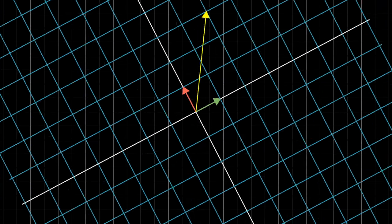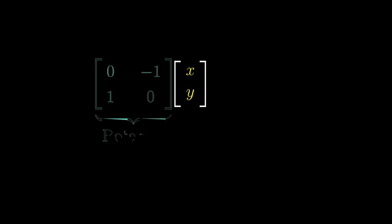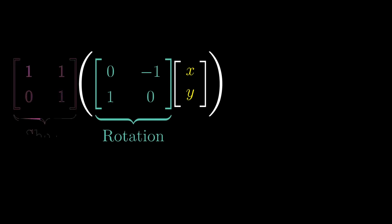Here's one way to think about that new matrix. If you were to take some vector and pump it through the rotation, then the shear, the long way to compute where it ends up is to first multiply it on the left by the rotation matrix. Then take whatever you get and multiply that on the left by the shear matrix.